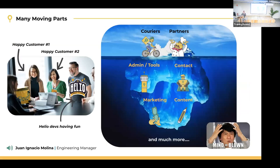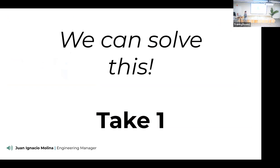I'd only been at the company a few months, so I knew the obvious customer app and some others — couriers, partners (people delivering food or restaurants using Global). But the iceberg goes deeper: the admin tools for controlling operations, the Contact team, marketing, content — things not widely known but necessary. That's when the picture of Helio having fun takes a turn.